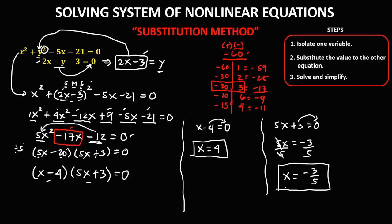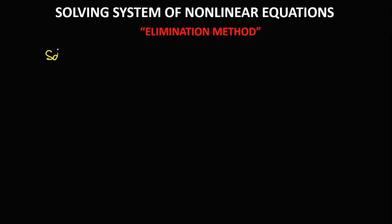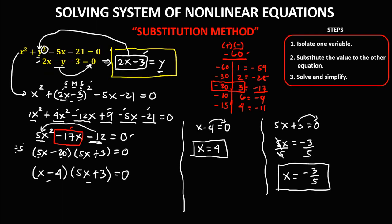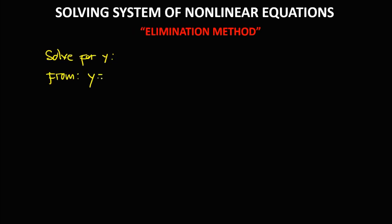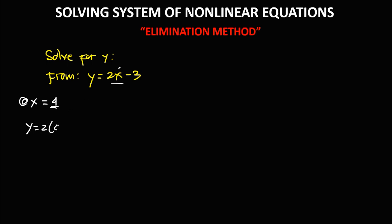Now solve for y using the equation y equals 2x minus 3. If x equals positive 4, substitute: y equals 2 times 4 minus 3, which gives y equals 8 minus 3, so y equals positive 5.